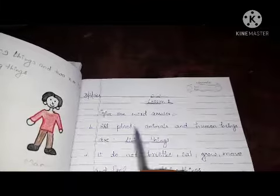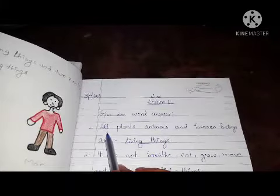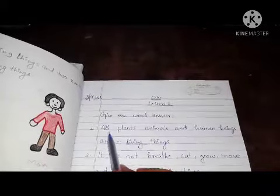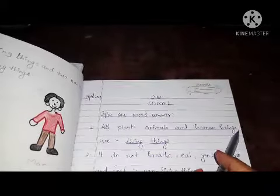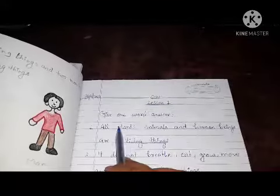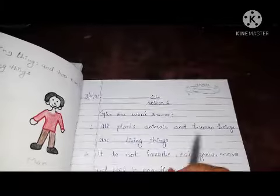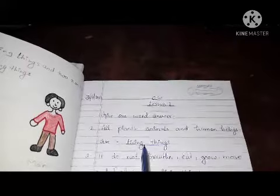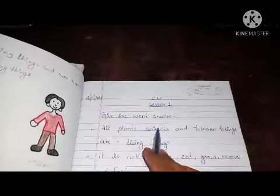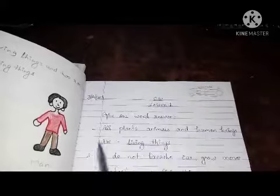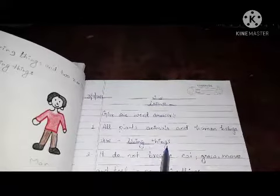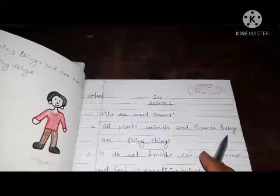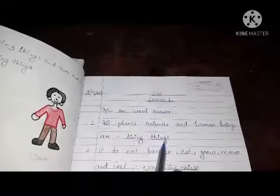So write this. You have to write one word answer like this: all plants, animals and human beings are what? Living things. So jitney bhi plants, animals and human beings hain, woh kya hai? Living things.